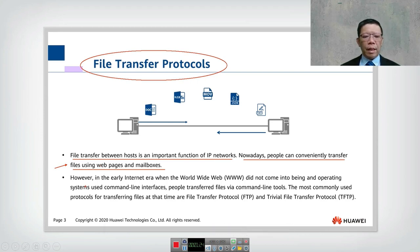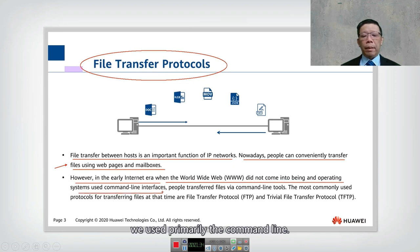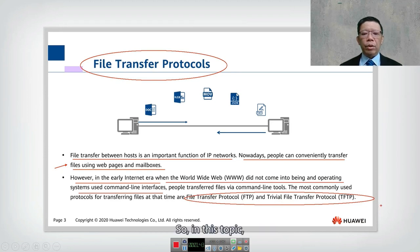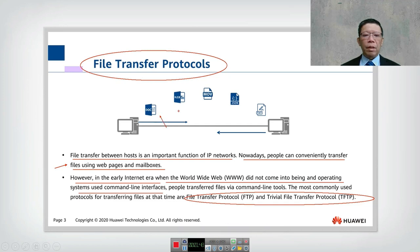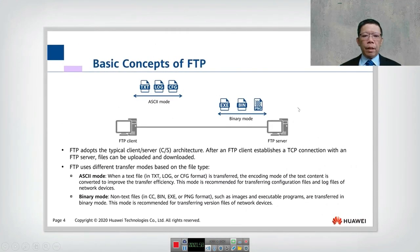In the internet era, before the World Wide Web, we used primarily command-line operating systems, and the two main protocols used were FTP and TFTP. In this topic we will look at how we transfer document files, Excel files, movie files, JSON files, and text files — these are just some of the files that can be transferred over the network.